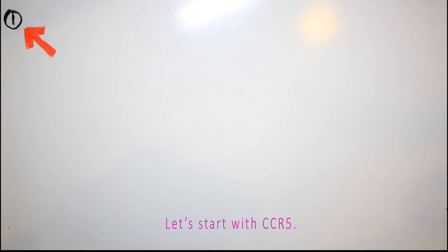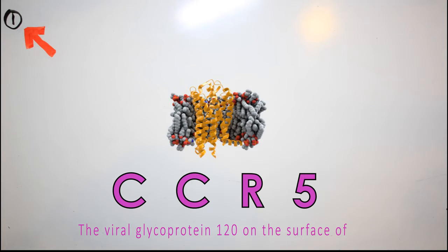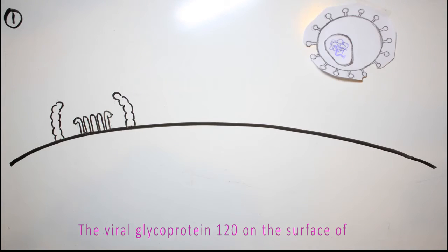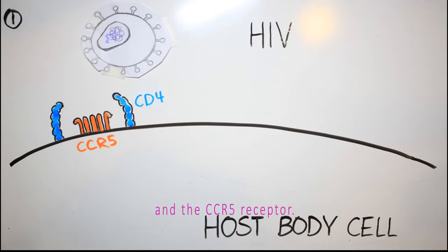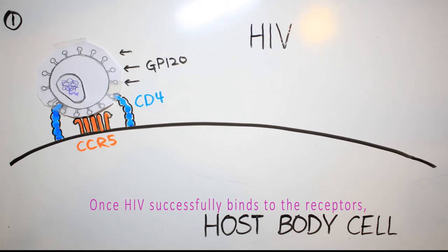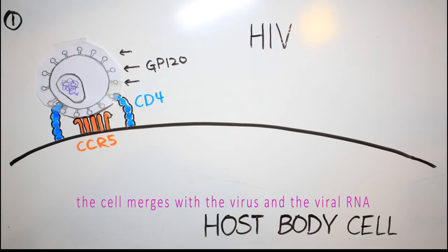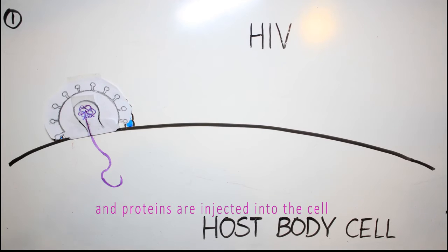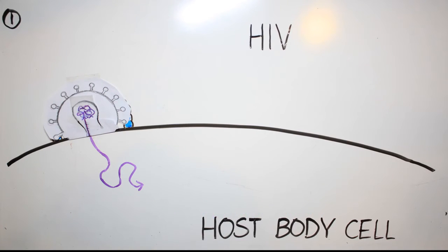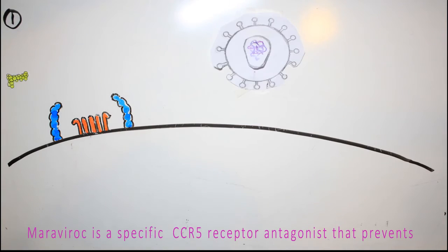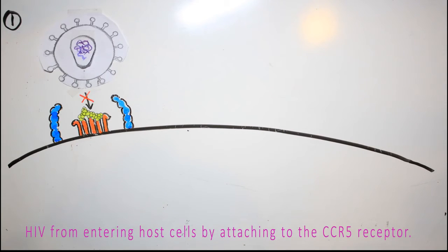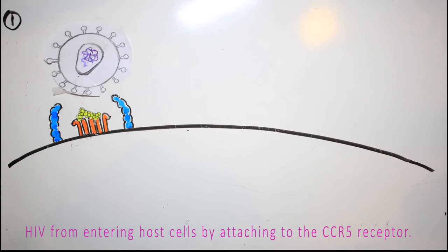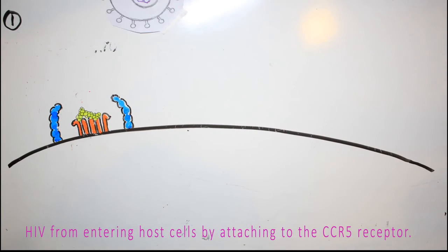Let's start with CCR5. The viral glycoprotein 120 on the surface of HIV binds to the host cell CD4 receptor and the CCR5 receptor. Once HIV successfully binds to the receptors, the cell merges with the virus and the viral RNA and proteins are injected into the cell. Maraviroc is a specific CCR5 receptor antagonist that prevents HIV from entering host cells by attaching to the CCR5 receptor.